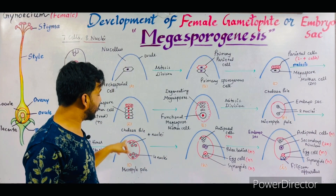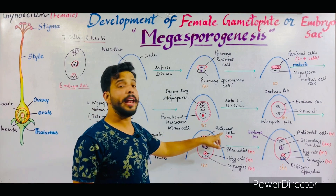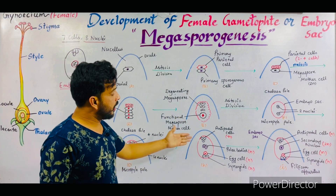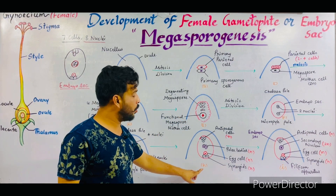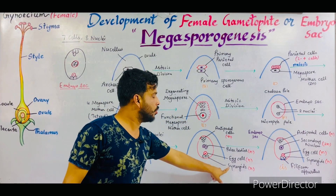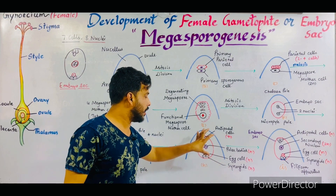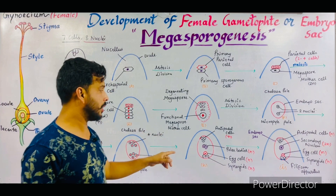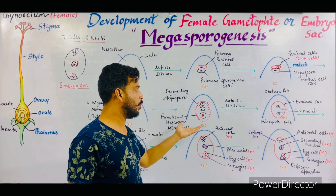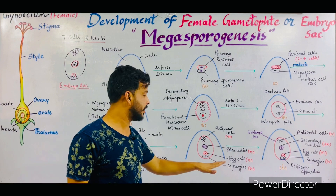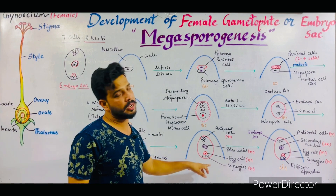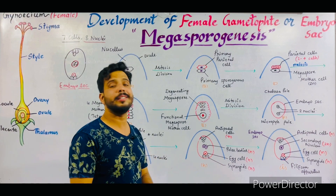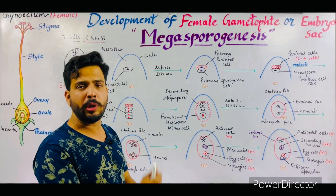Thus in the center two nuclei are present, which are termed as the polar bodies. The remaining three nuclei at the chalaza pole are converted into antipodal cells — so these are three antipodal cells present at the chalaza pole. At the micropyle pole, two cells convert into synergids and one is the egg cell. So there are total eight nuclei inside the embryo sac: three towards the chalaza pole as antipodal cells, two in the center as polar bodies, and three at the micropyle pole — one egg cell and two synergids.